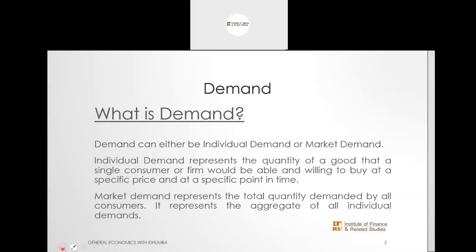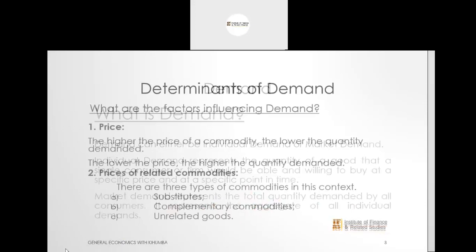When we evaluate demand, we look at it from the perspective of an individual or from the perspective of all individuals in the market. Individual demand represents the quantities of a good that a single consumer would be able and willing to buy at a specific price at a specific point in time. Market demand, on the other hand, represents the total quantity demanded by all consumers — that is, the aggregate demand of all individuals.